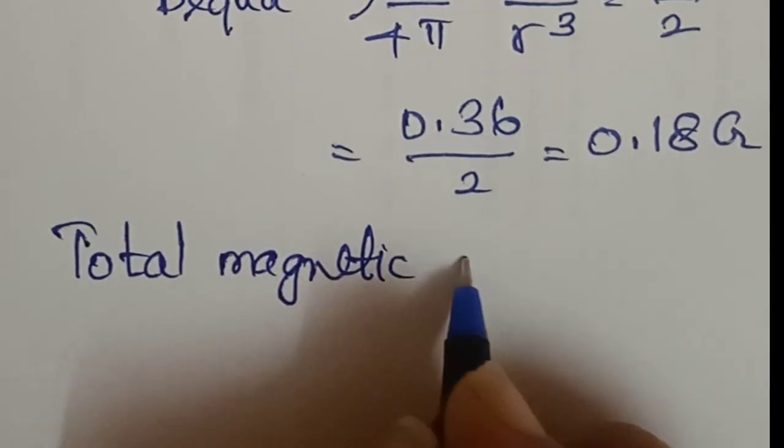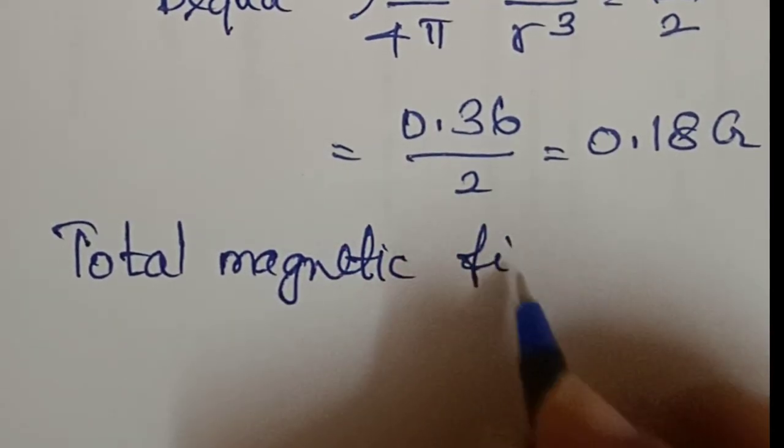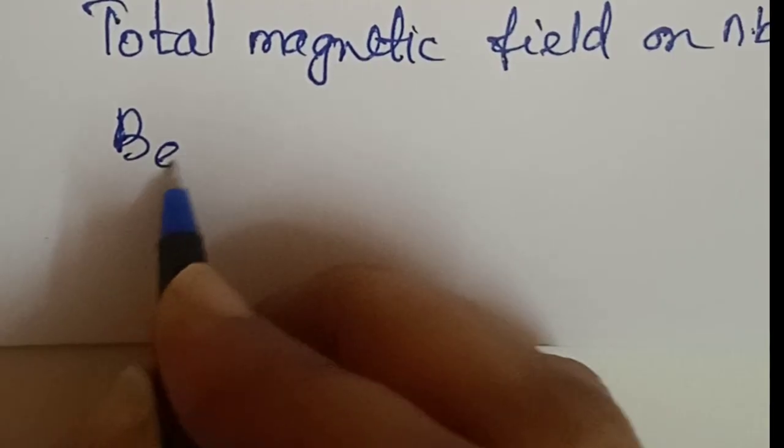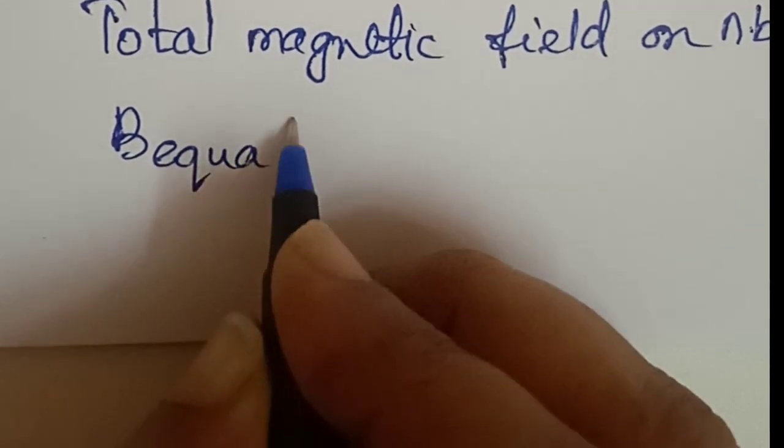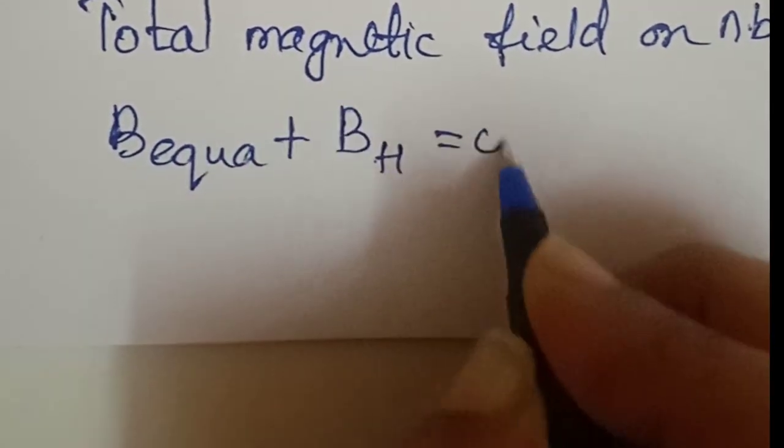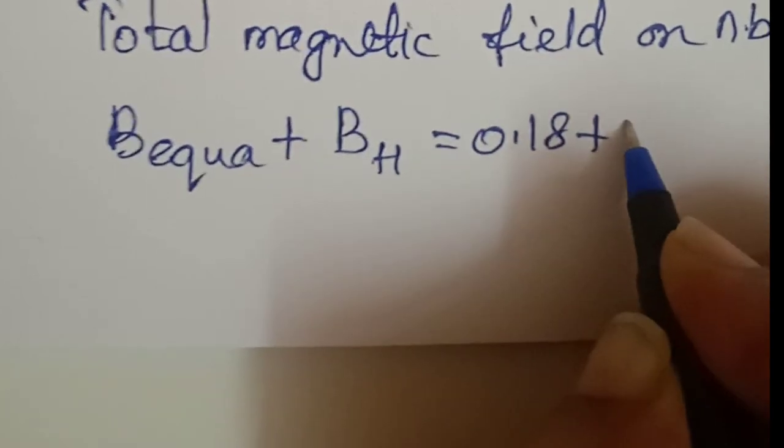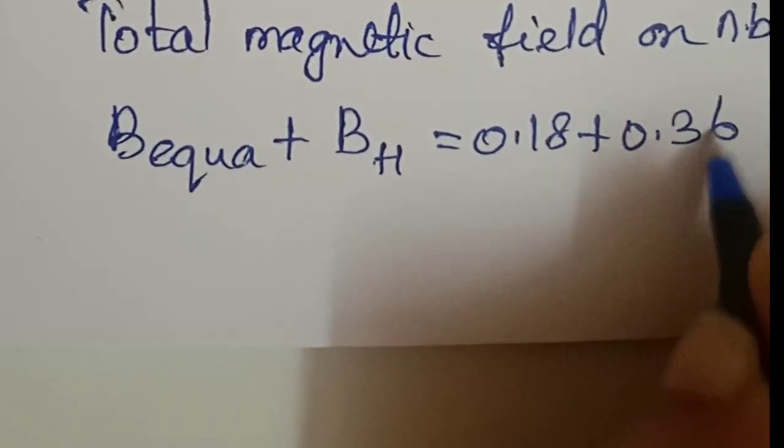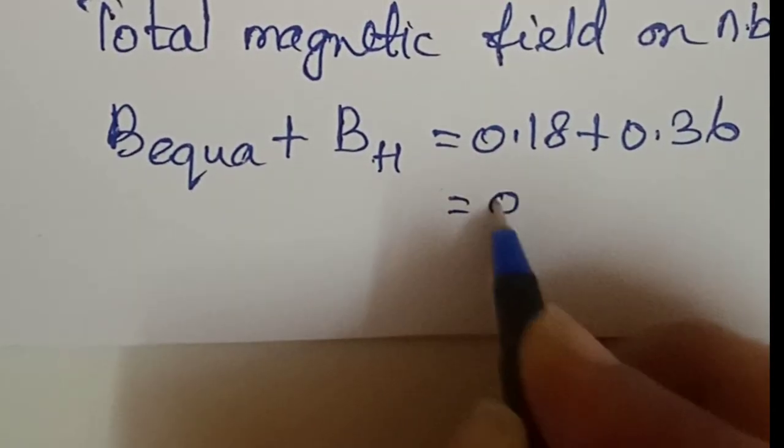Total magnetic field on normal bisector is equal to B equatorial plus BH, which equals 0.18 plus 0.36, which equals 0.54 gauss.